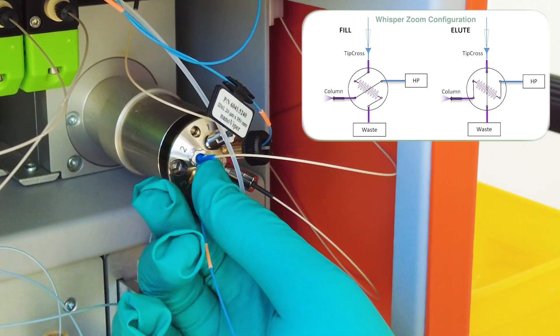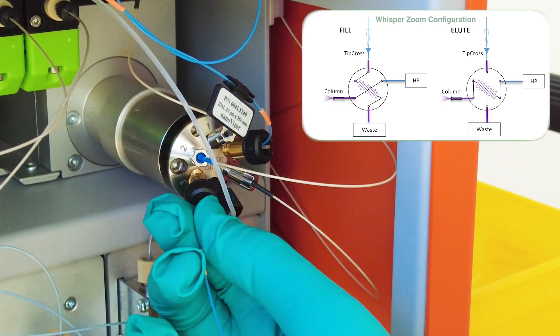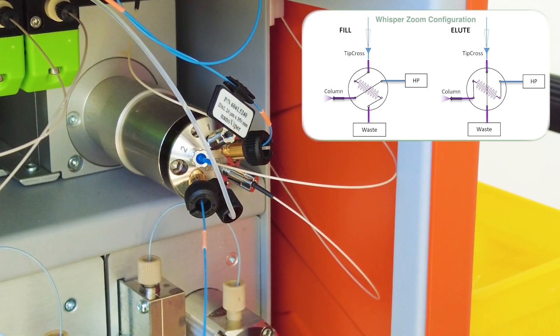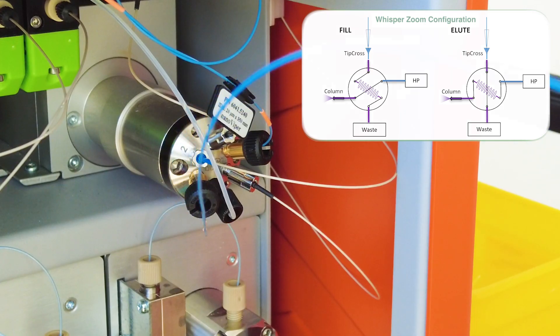The inlet from the HP pump is now going through port six and the outlet to the column is now going through port three. Now that we've successfully reconfigured the system to zoom mode...